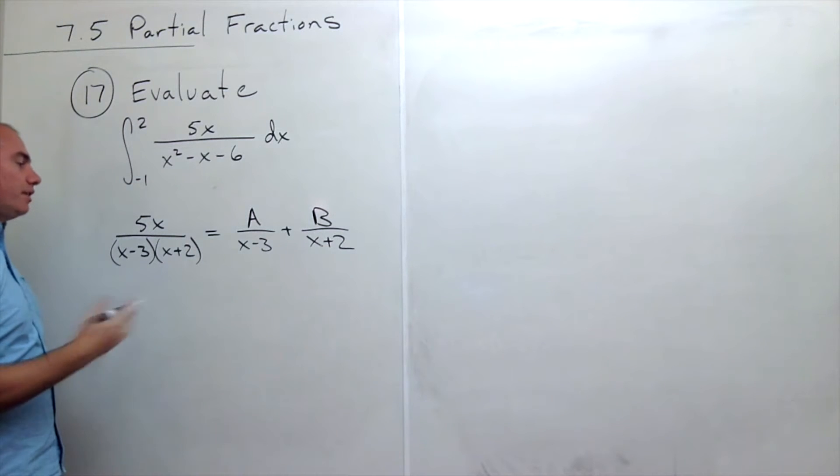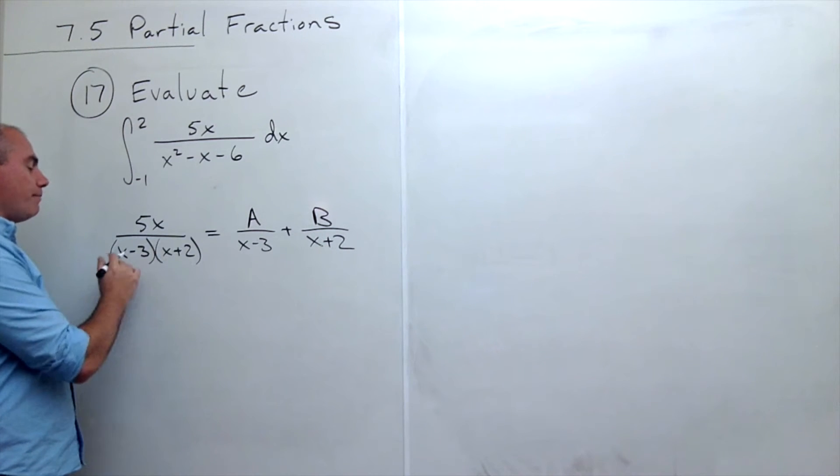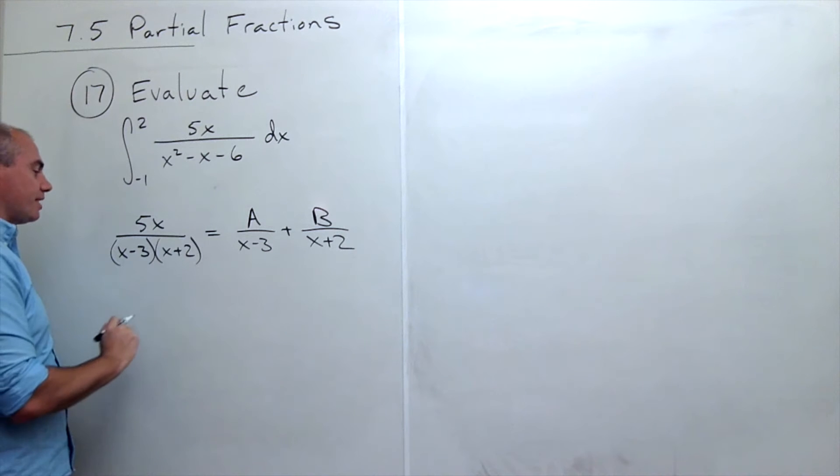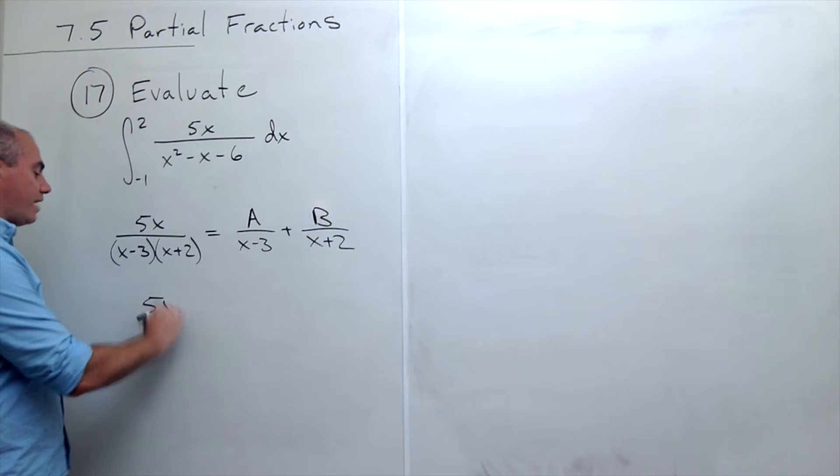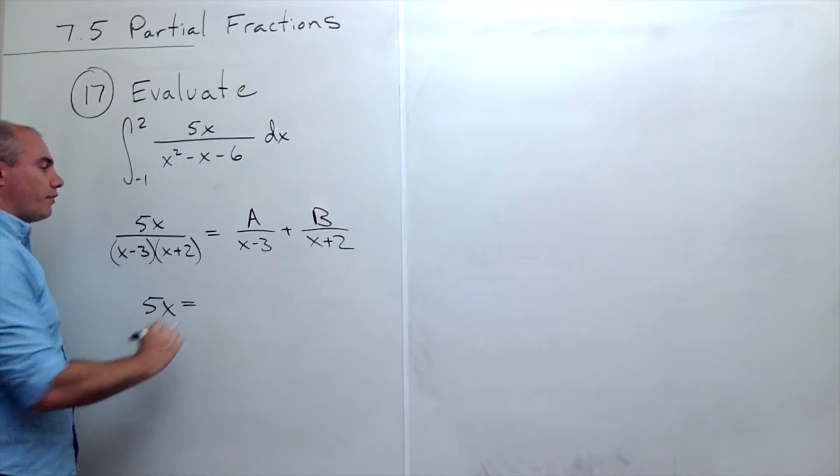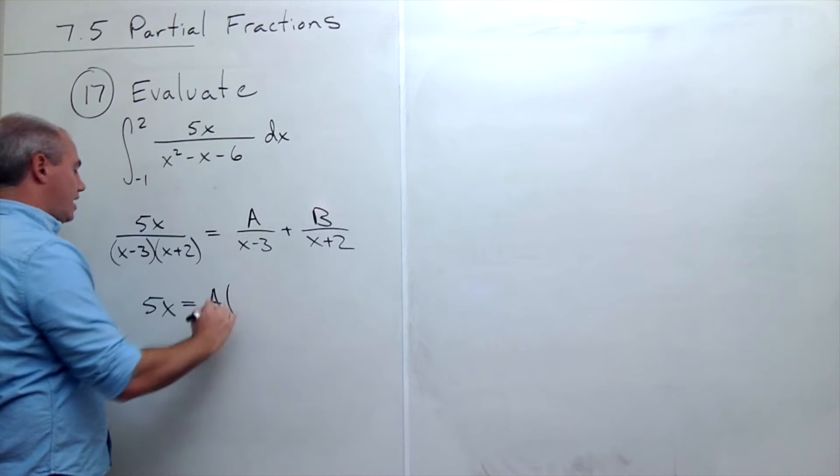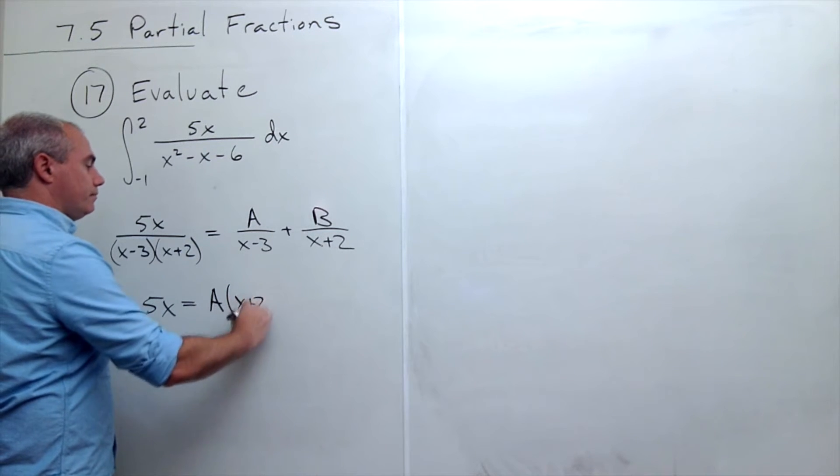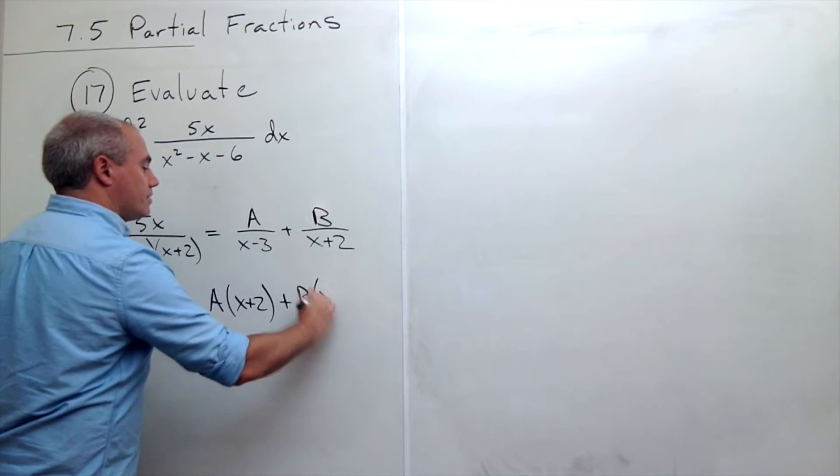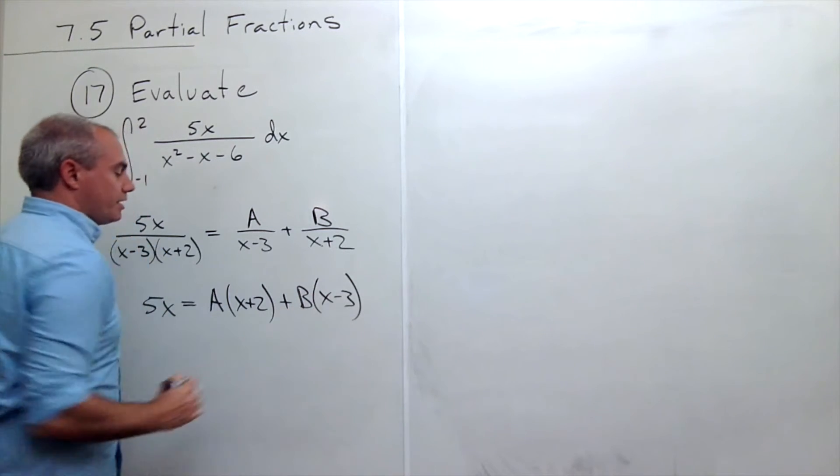Now let's clear the fractions. If I do, I multiply both sides by x minus 3 times x plus 2, and I get 5x on the left side. And on the right side, I get A times x plus 2 plus B times x minus 3.